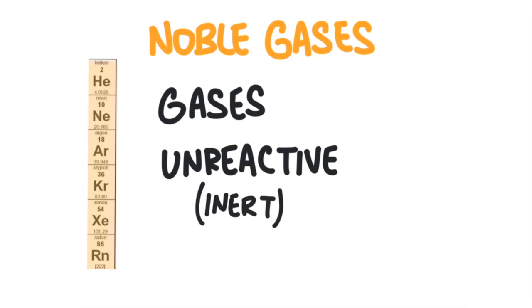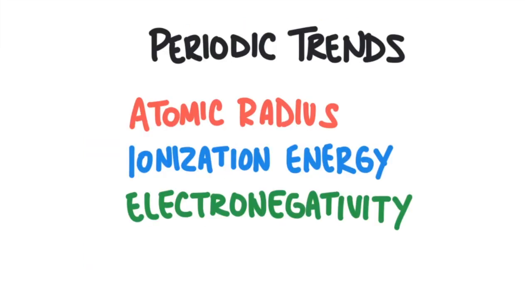The periodic table is useful for predicting the properties of elements according to patterns and trends. We call this periodic law or periodicity. We will talk about three trends: atomic radius, ionization energy, and electronegativity.